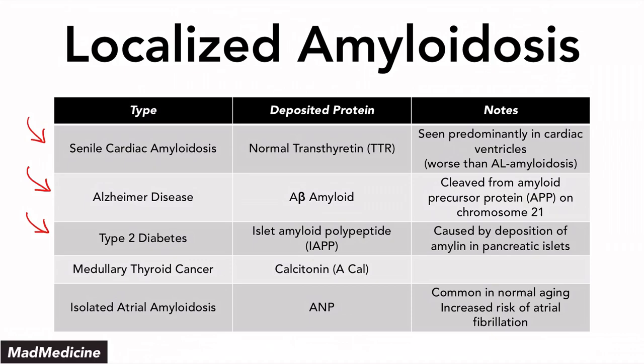In senile cardiac amyloidosis, you have normal transthyretin proteins — TTR — being deposited mainly in the cardiac ventricles. Because you're predominantly affecting the cardiac ventricles, this causes more harm to the cardiac myocytes than AL amyloidosis does and can lead to worsening cases. It's called senile cardiac amyloidosis because it usually occurs in patients who are older and of later age.